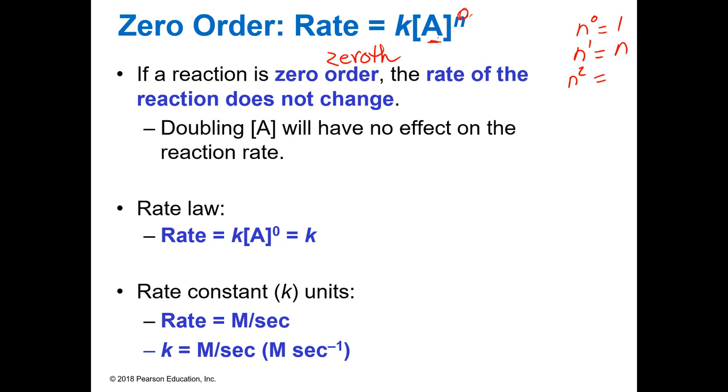So we write the rate law for that as the rate is equal to the constant K at a specific temperature times the concentration of A to the zero power. So the rate is going to be equal to whatever K is. Because K times A to the zero is the same as K times one is going to be equal to K. Because anything to the zero power is one. And so your units are going to be molarity per second.